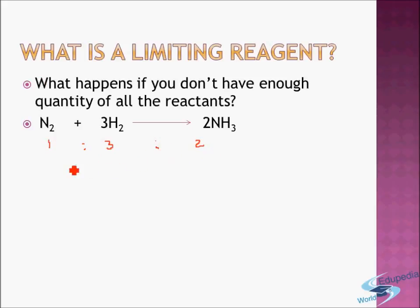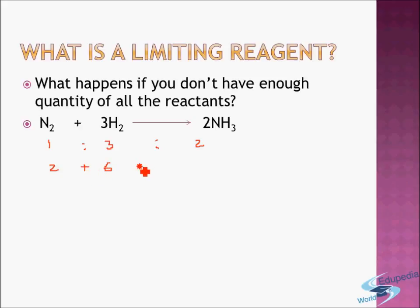So one mole of nitrogen will require three moles of hydrogen for complete reaction, and when this reaction completes it will form two moles of ammonia. Similarly, if instead of one mole I have two moles of nitrogen, then I will need six moles of hydrogen, and when two moles of nitrogen and six moles of hydrogen combine together they will form four moles of ammonia.